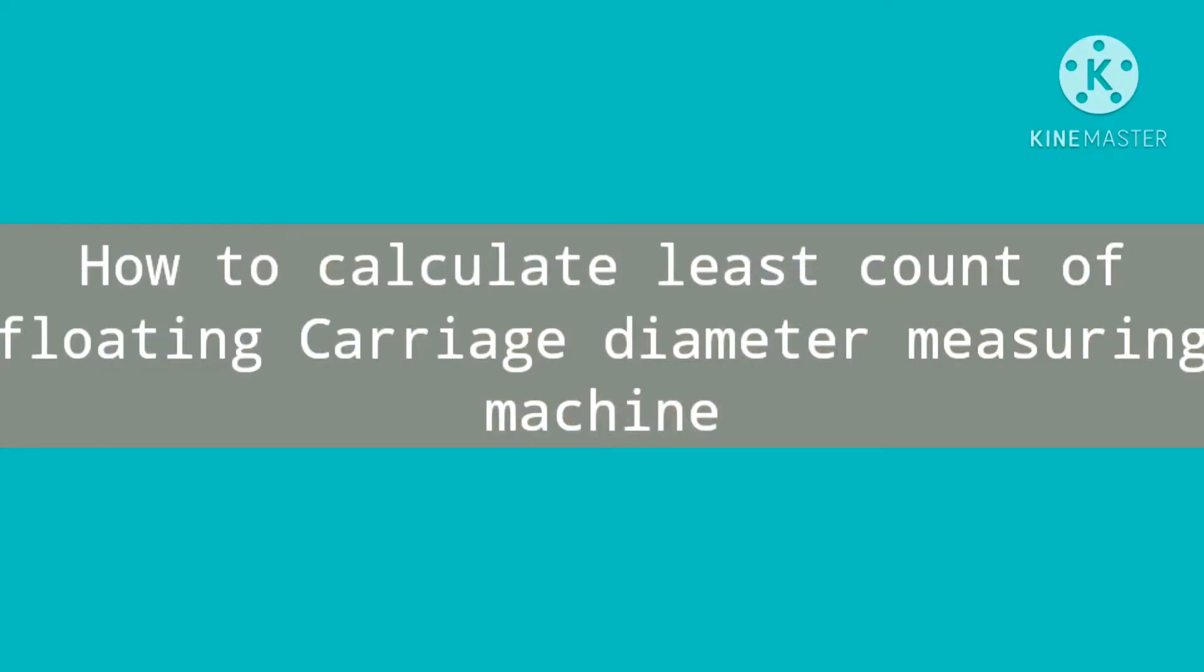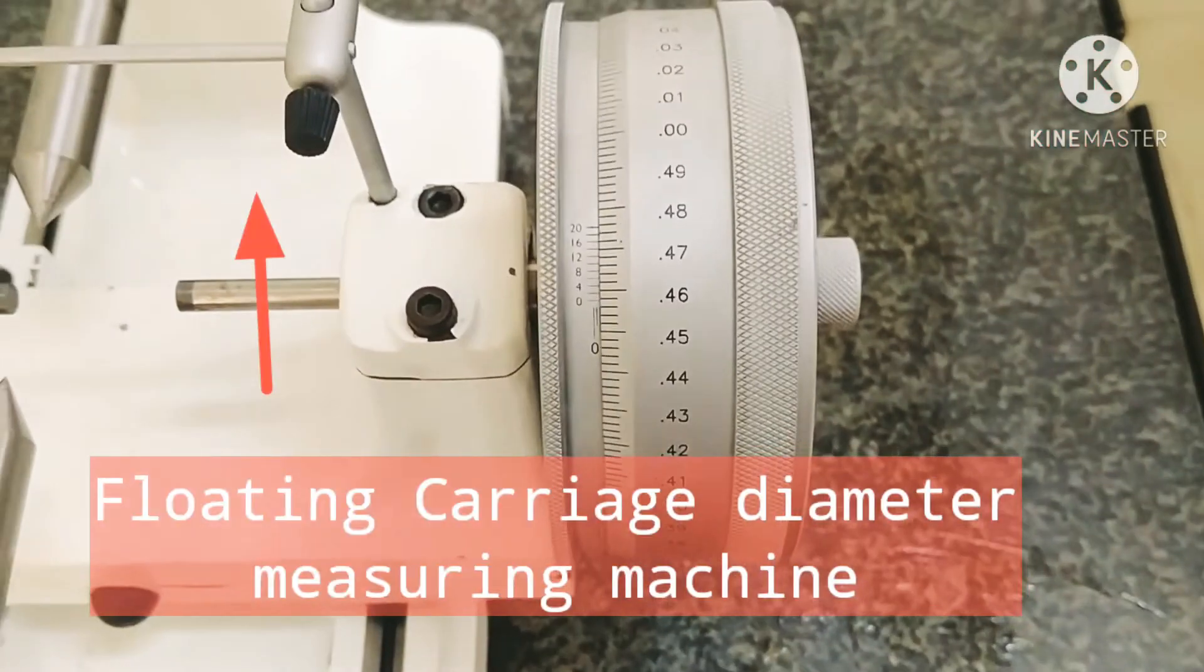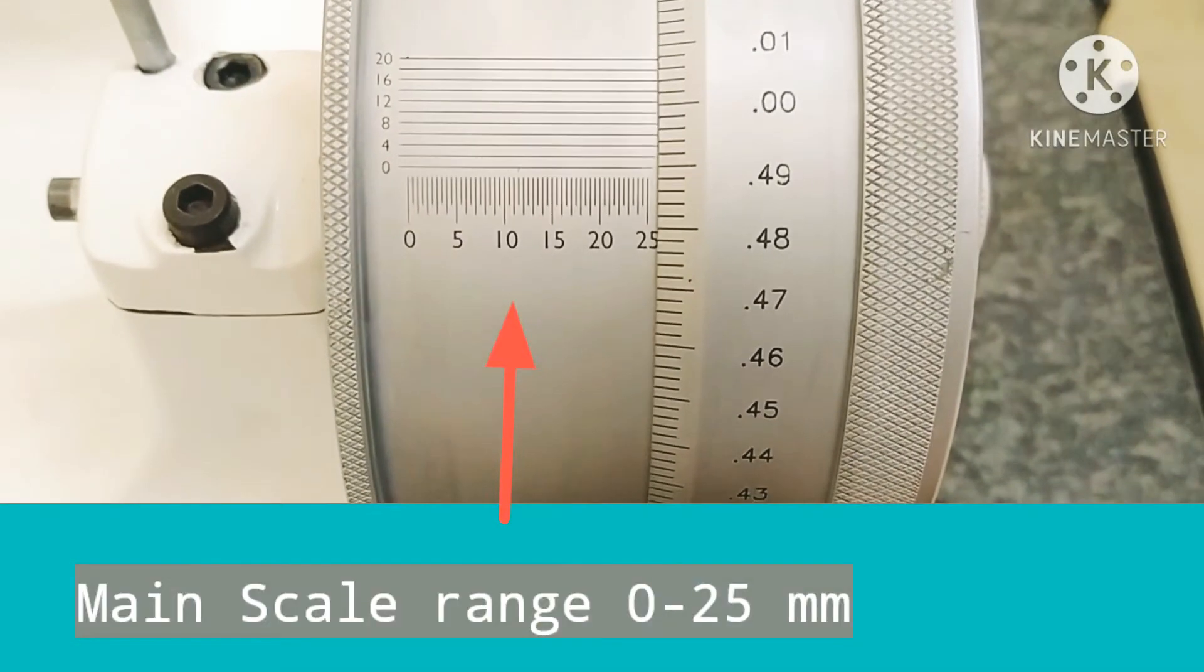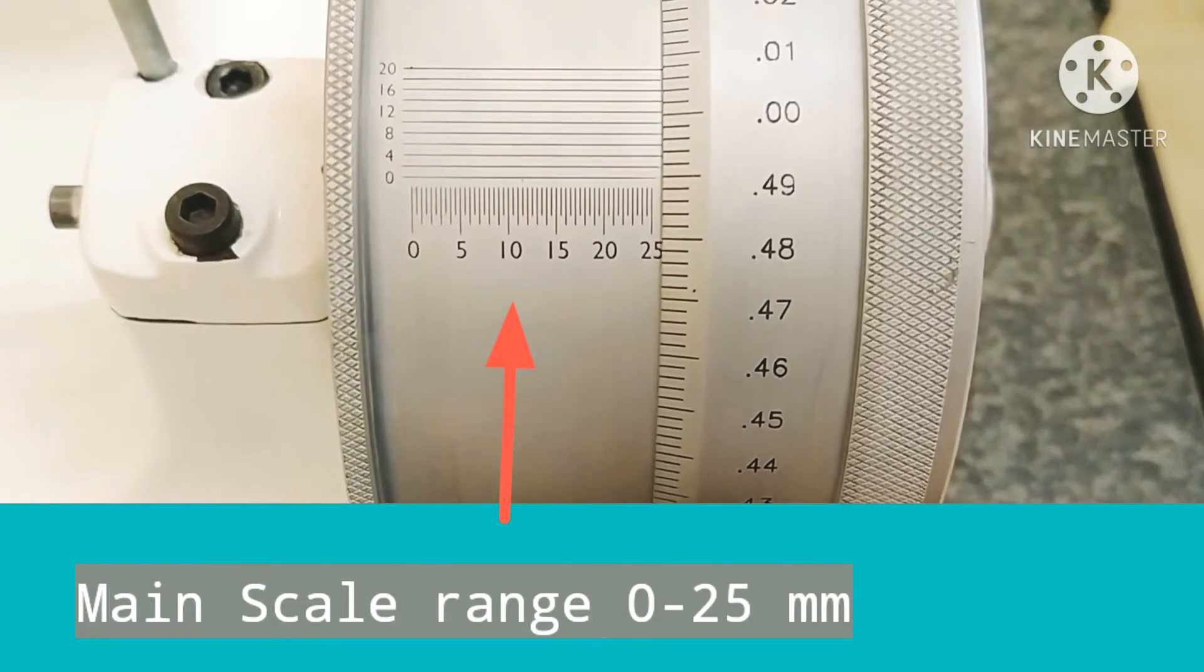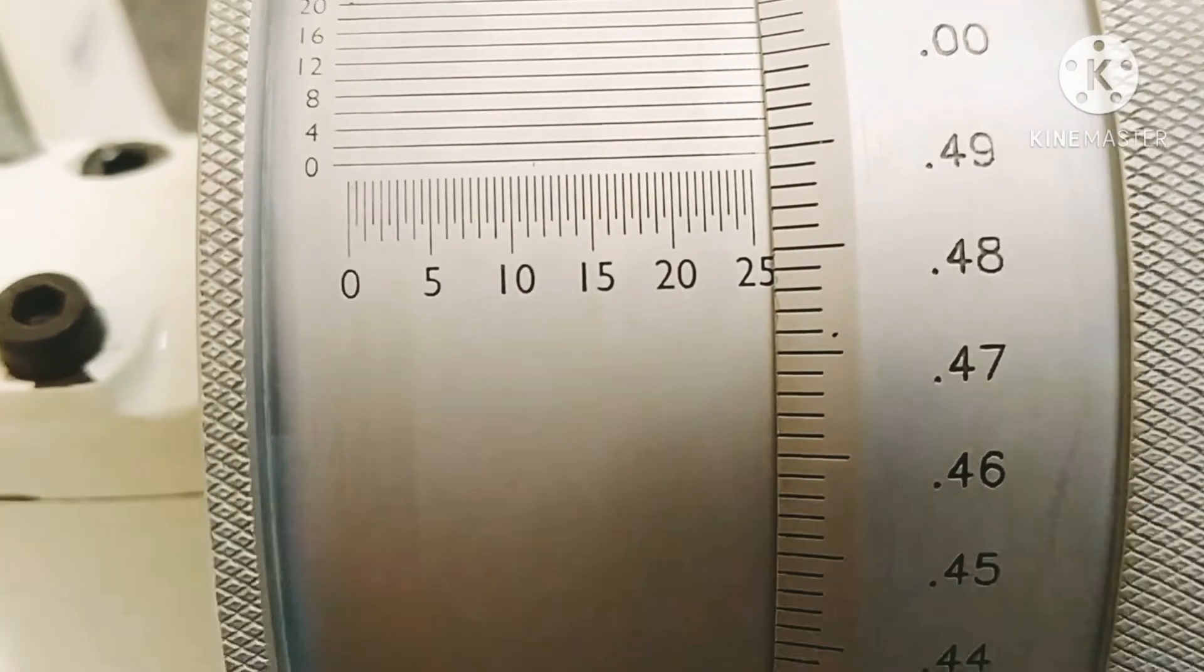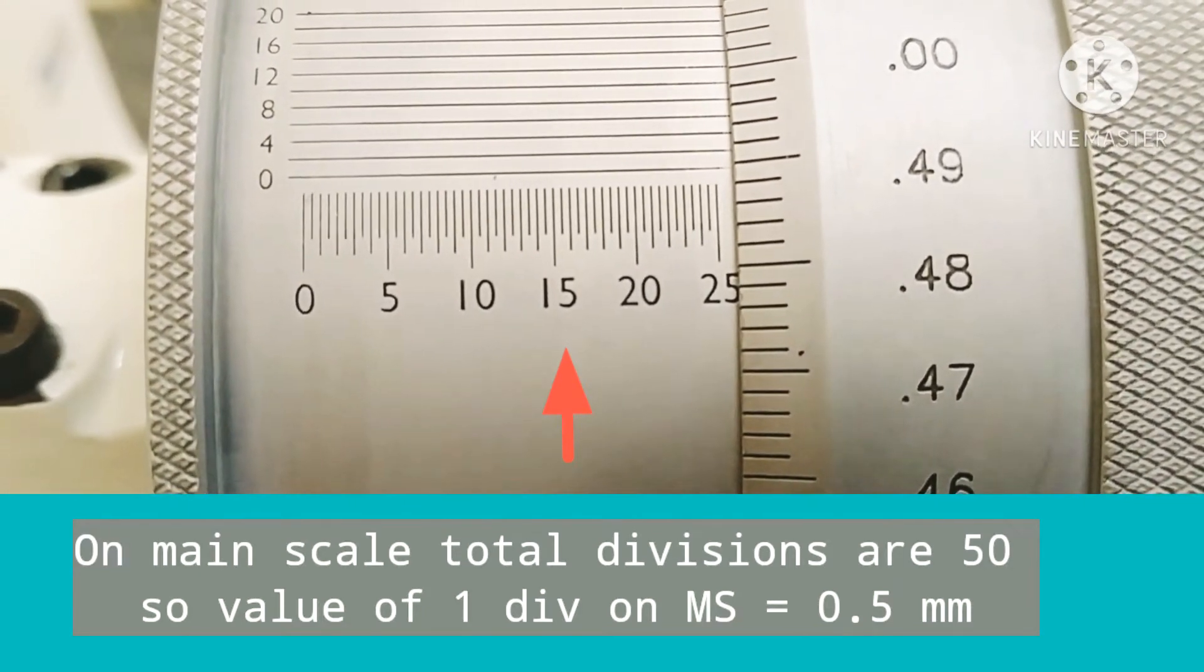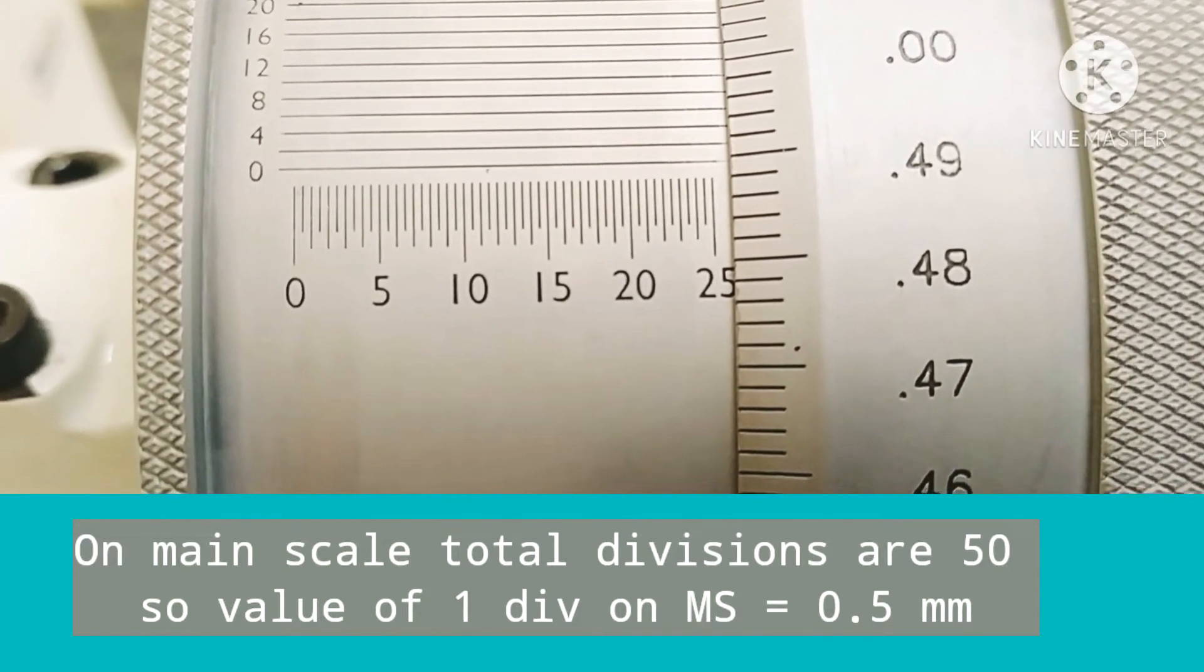Before taking readings with the floating carriage diameter micrometer machine, first we will calculate its least count. On the main scale, you can see the limit is 0 to 25 mm, and there are total 50 divisions. That means the value of one division is 0.5 mm.